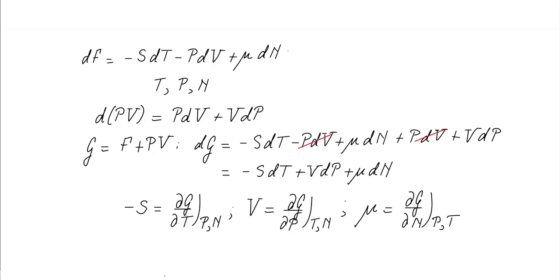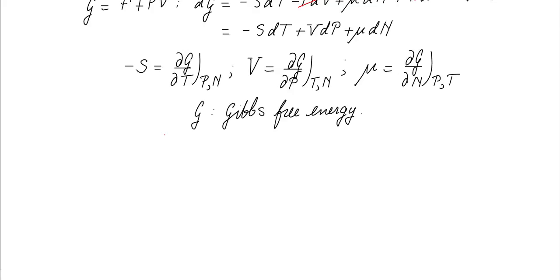We have obtained G, called the Gibbs free energy — an independent function of the parameters T, P, and N. From this equation: minus S equals dG/dT, V equals dG/dP, and mu equals dG/dN. G is the Gibbs free energy, describing a system at constant temperature, constant pressure, and fixed particle number N. So we have two free energies: the Gibbs and the Helmholtz. Usually when people just speak of 'the free energy,' they mean the Helmholtz free energy.